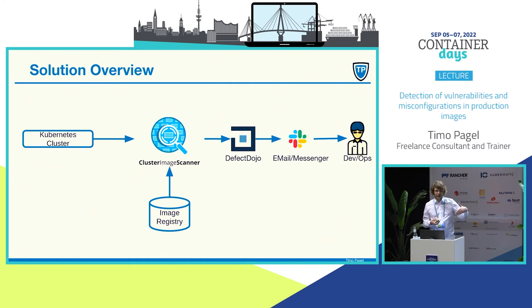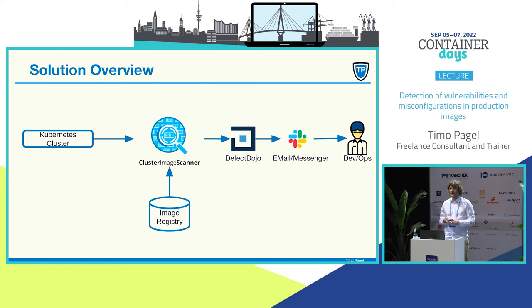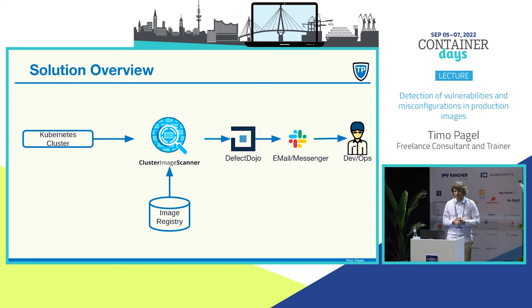The vulnerability management system, for example, detects when we have one vulnerability in our application and we run the scan again — it detects this as a duplicate. When you have treated this finding, like you mark it as false positive or you accepted the finding because you know a patch is coming next week and you accepted it for one week, then DefectDojo won't raise this issue again.